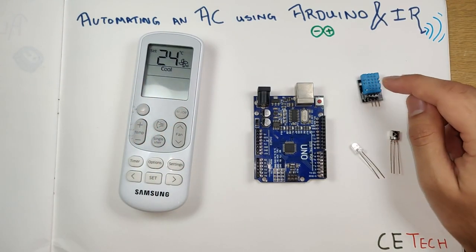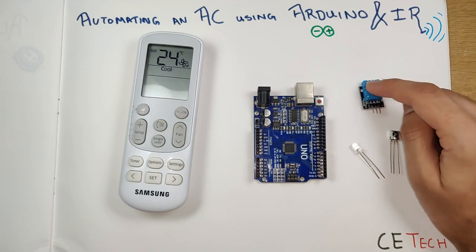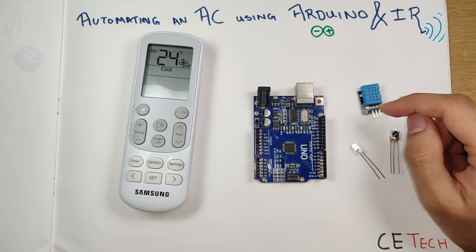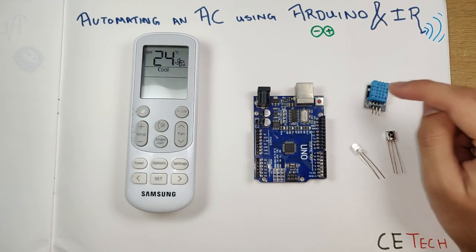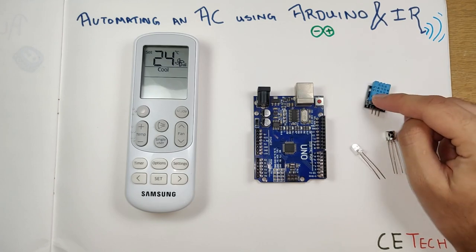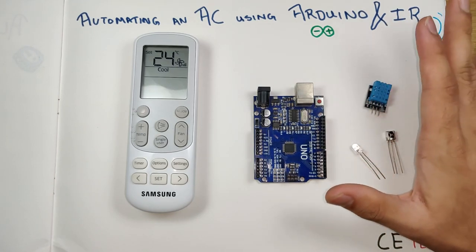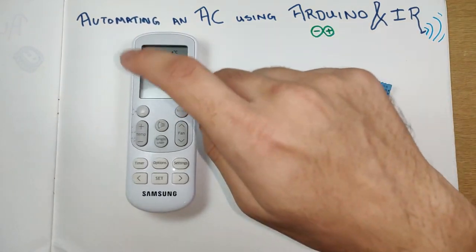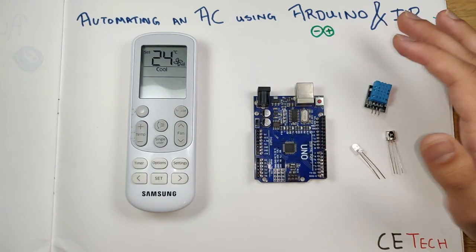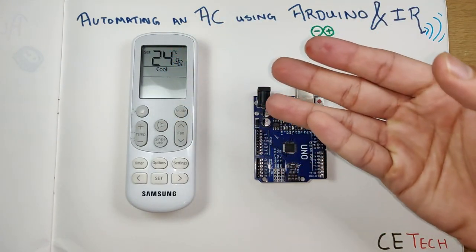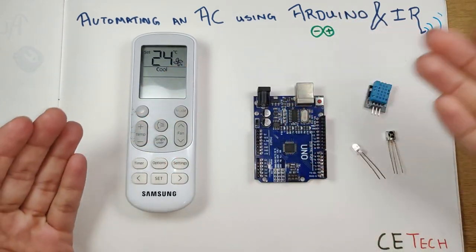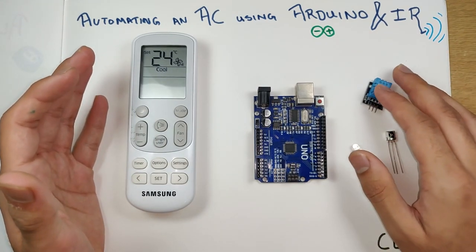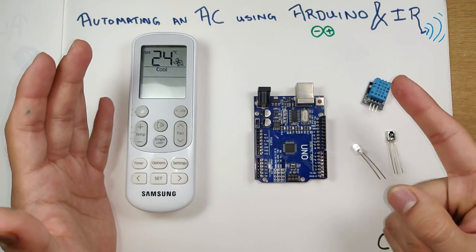We'll also be looking at the DHT11, which we'll use as a sensor to sense the room temperature. I've done a video on the DHT11 previously — do check that out. What we'll be doing is sensing the temperature from the DHT11, and when we find the room temperature to be ambient and satisfactory, the Arduino will accordingly toggle the air conditioner without using the remote.